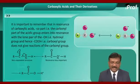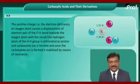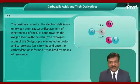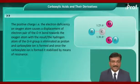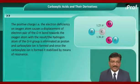The positive charge — that is, the electron deficiency — on the oxygen atom causes a displacement of the electron pair of the O-H bond towards the oxygen atom. With the result, the hydrogen atom of the OH group is eliminated as a proton and a carboxylate ion is formed.